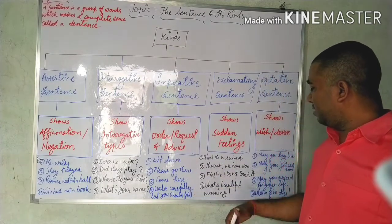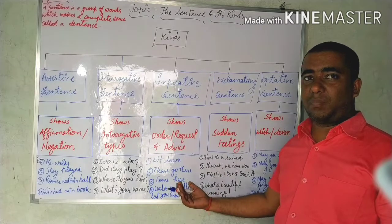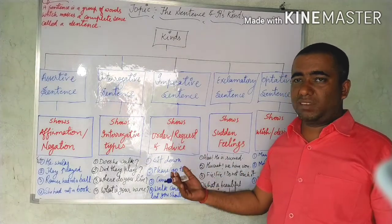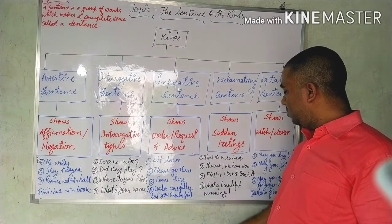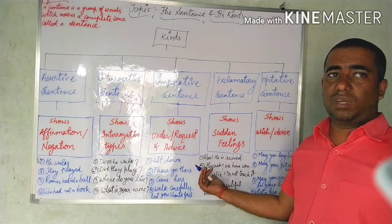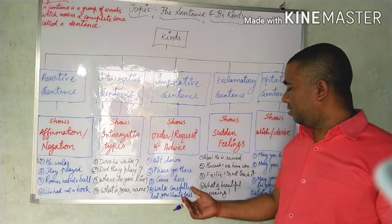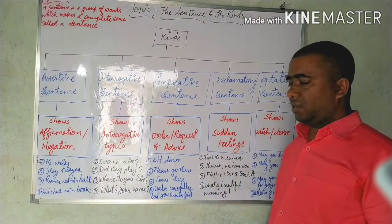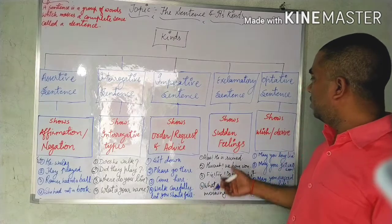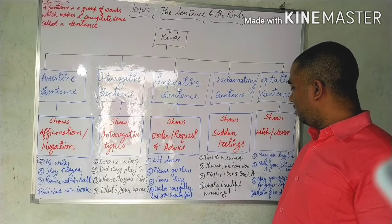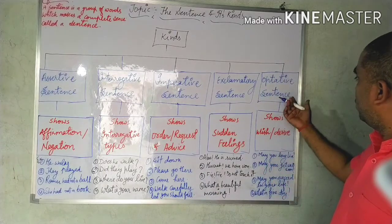When there is happiness, we use 'Hurray!' — the symbol of happiness. The third exclamatory example is 'Fie! Fie!' — this is the symbol of hatred. When something is not good and we hate something, we say 'Fie! Fie! Do not touch it.' The fourth exclamatory example is 'What a beautiful morning!' — when there is surprise, we can also use exclamatory sentences.